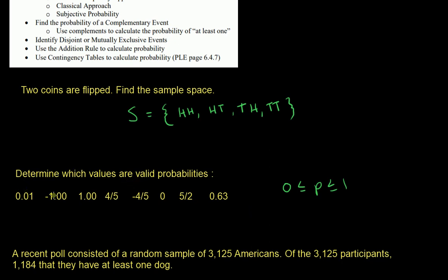Which are valid probabilities? 0.01 — is it between 0 and 1? Yes, so that one's good. Negative 1 is not between 0 and 1 because it's negative, so it's not valid. On the exam you'll also have to explain why or why not. Is 1 a valid probability? Yes, because probabilities can equal 1 — in fact, 1 means guaranteed to happen. 4/5 is between 0 and 1, so that's good. Negative 4/5 is not valid because it's negative.